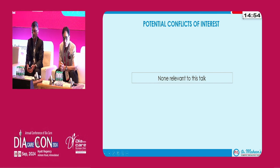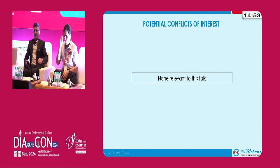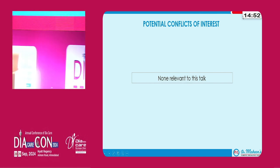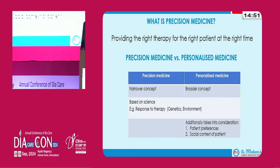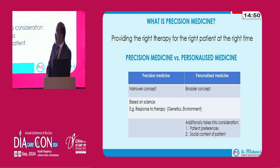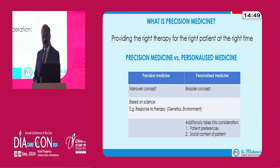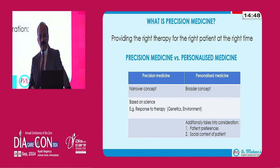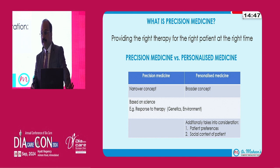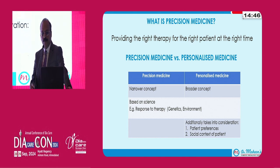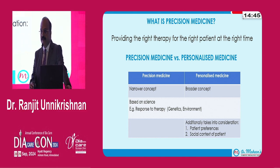What do you mean by precision medicine? Precision medicine is nothing but providing the right therapy to the right patient at the right time.